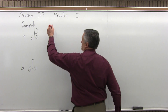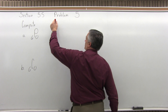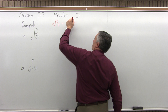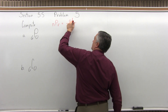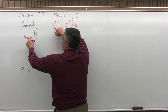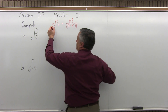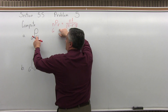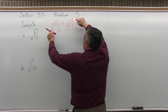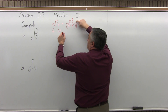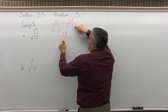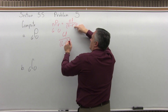For 6 permutation 0, start with the permutation formula: n permutation r equals n factorial over (n minus r) factorial. The n is the larger of the two numbers, so n is 6. The r is the smaller, so r is 0. Putting those into the formula, you get 6 factorial over (6 minus 0) factorial.